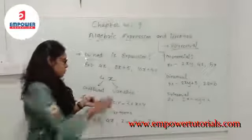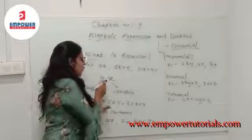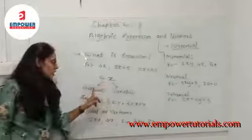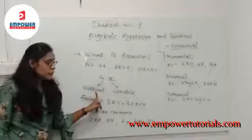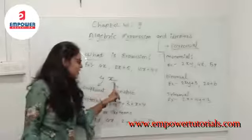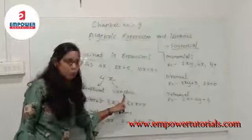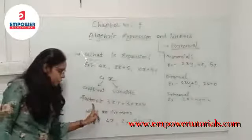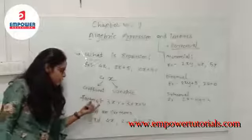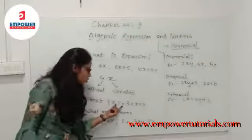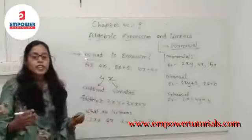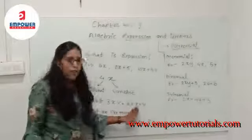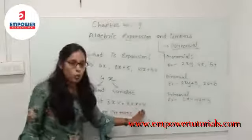Now this 4x — this 4 is called the coefficient and this x is called a variable. And here in factors, we have 3xy. So how do we write 3xy? That is 3 into x into y.